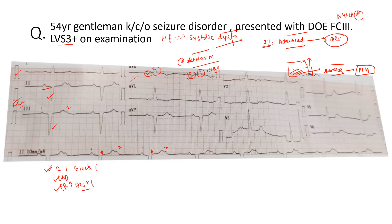If you see the ST-T changes — there is an R wave, there is an S wave, and an R prime wave. Whenever we have an RSR', it usually means right bundle branch block. But for calling it an RBBB, there should additionally be a wide S wave in lead one, AVL, or V6. Is it there? There is no S wave in lead one, no S wave in AVL, no S wave in V6 — or it's a small S wave that doesn't look like a true RBBB S wave. So can we still call it RBBB?